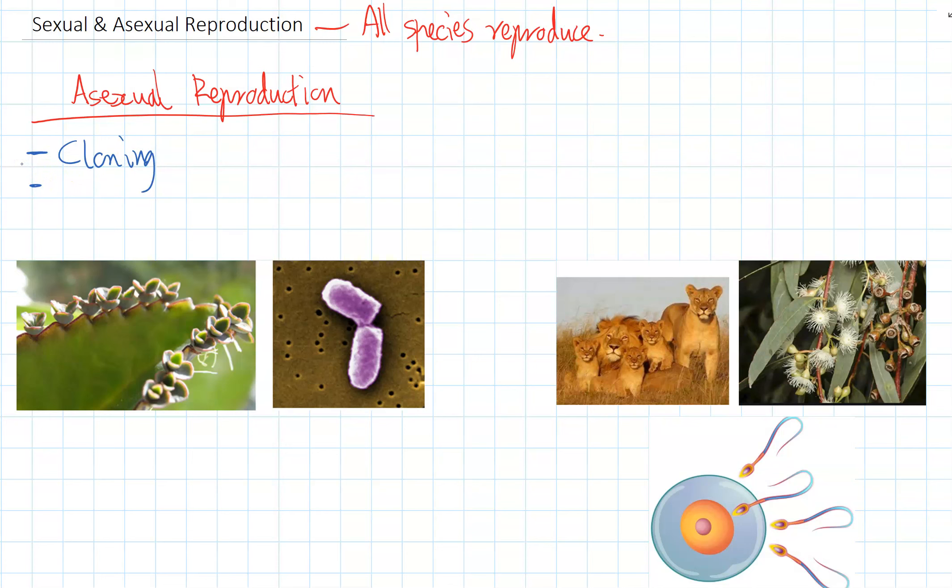So when a species does asexual reproduction, it just makes copies of itself. So one individual doesn't have to breed with another one; it can just grow new versions of itself that are exactly the same, that are identical, and they'll grow off into adults that are exactly the same.